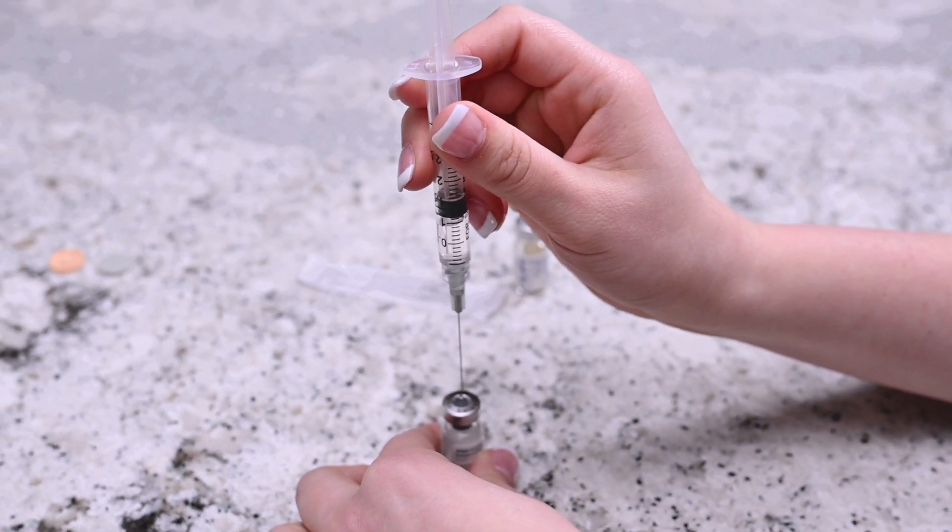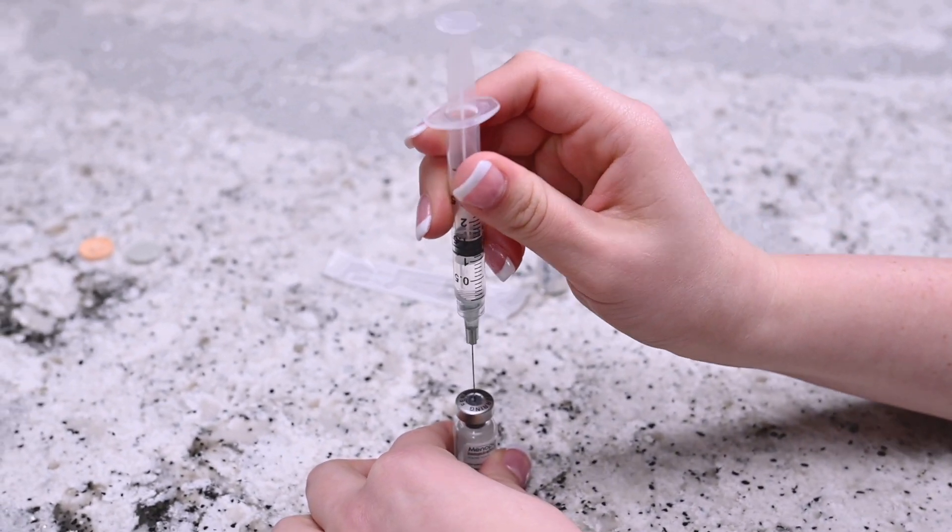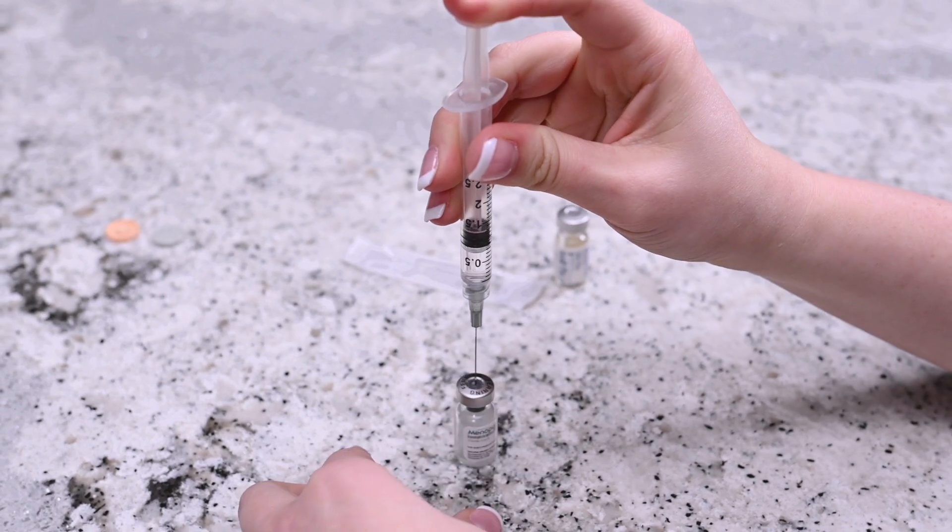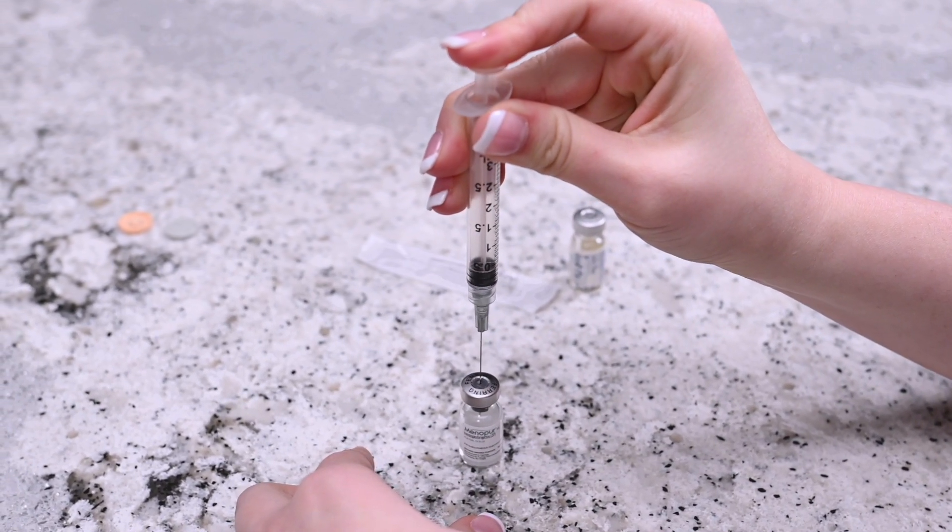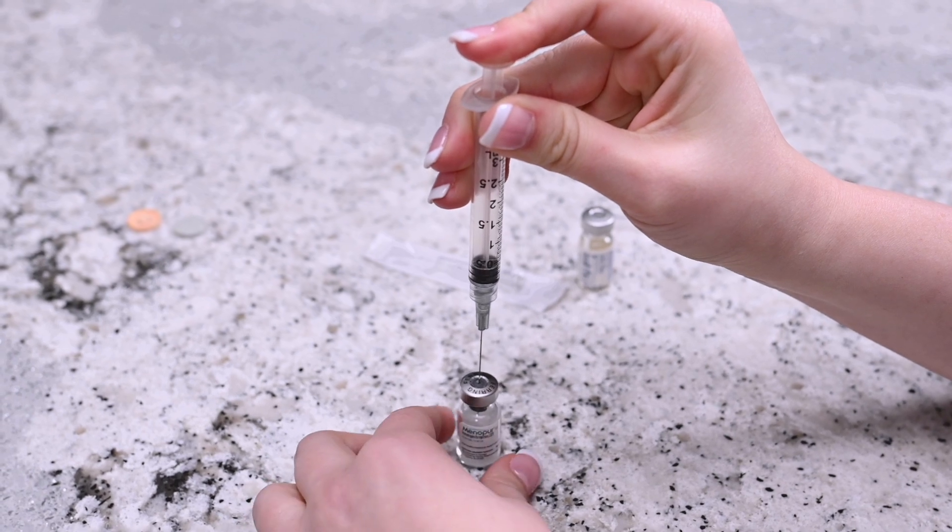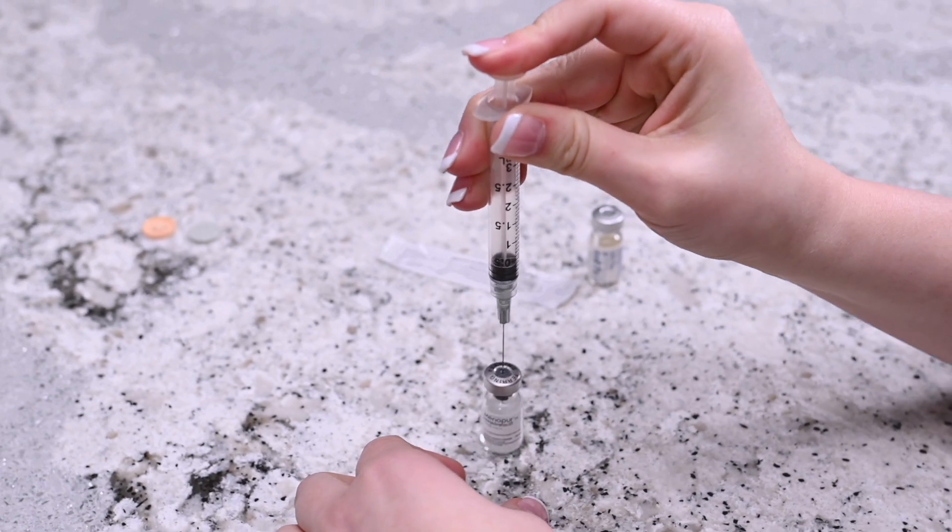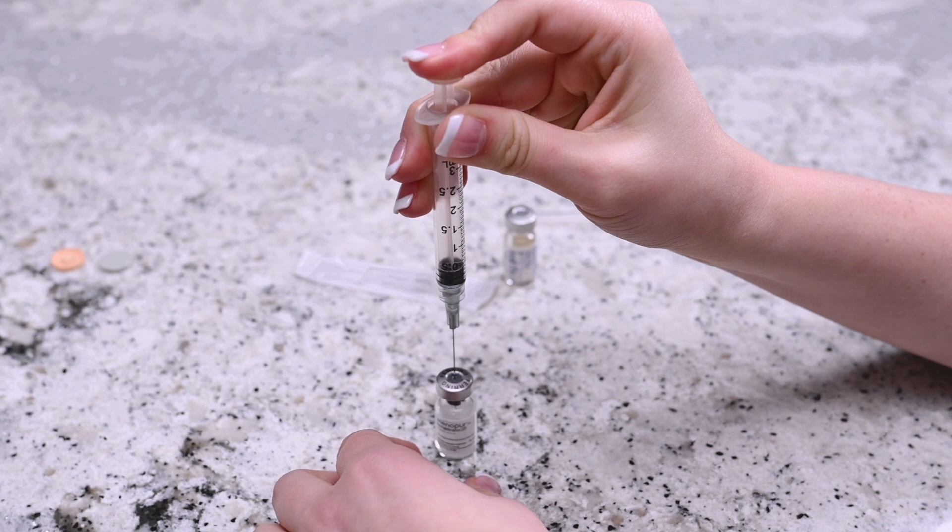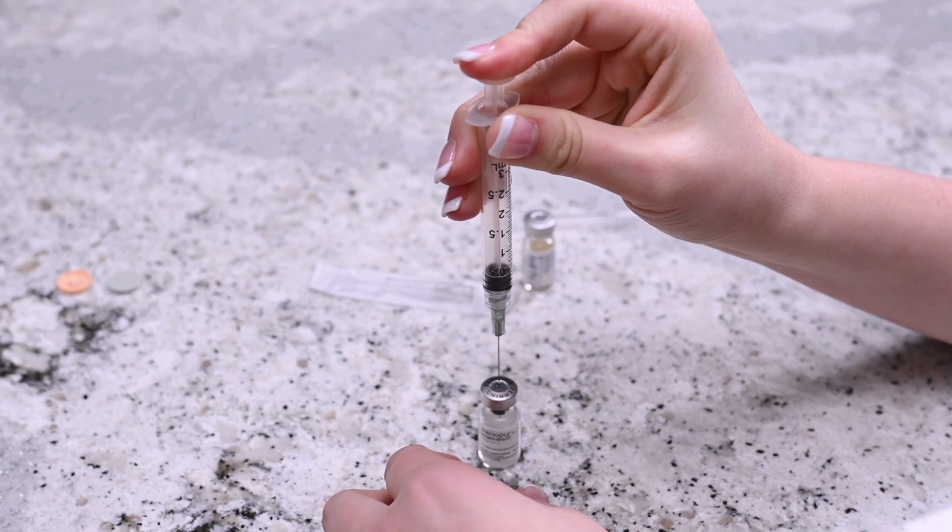Insert the needle into the rubber stopper on the vial of Menopur powder and release the syringe's content into it by pressing on the plunger. After releasing all the liquid into the vial of Menopur powder, gently mix the contents until the powder dissolves. Do not shake the vial.